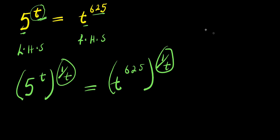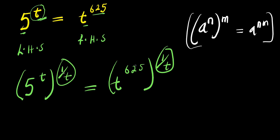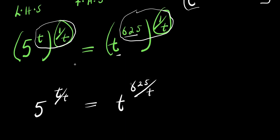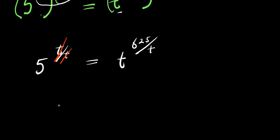Now, let's consider this identity: a to the power of n, raised to the power of m, equals a to the power of n times m. So I'm going to multiply this out on both sides. We are going to have 5 to the power of t times 1/t, that is t divided by t. So t eliminates t, giving us 5 to the power of t/t, equals t to the power of 6/5 divided by t.